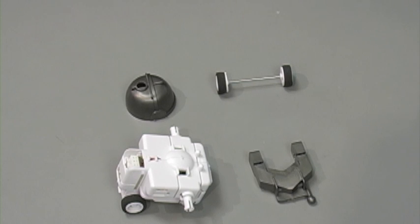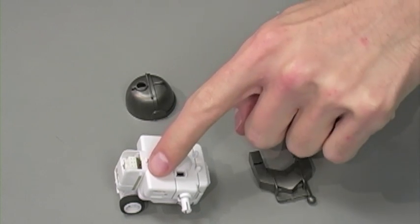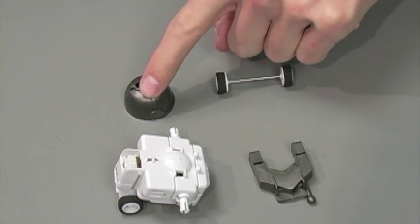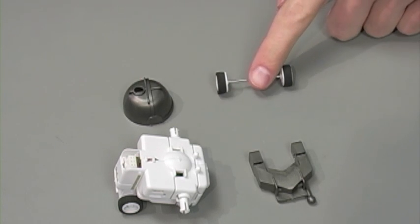To assemble the space rover, you need your upper gearbox, parts B11, B13, and the front wheel.